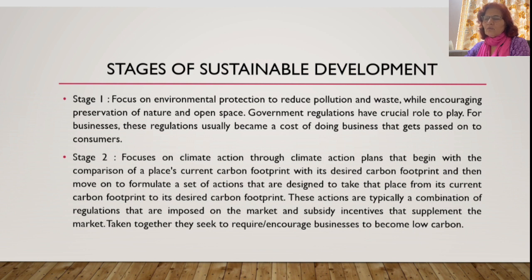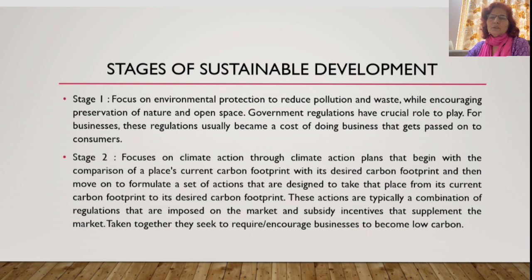Now we will discuss the elements of sustainable development. Stage one focuses on environmental protection — reducing pollution and waste while conserving nature and open space. Government regulations play a crucial role here. For businesses, these regulations usually become a cost of doing business that gets passed on to consumers, meaning the cost of production also increases.